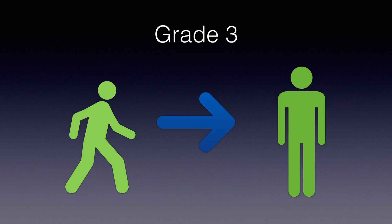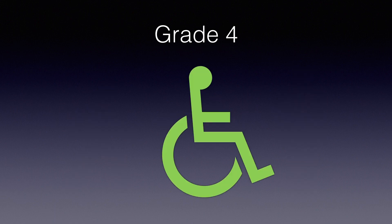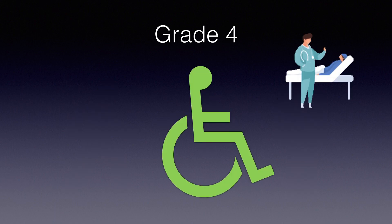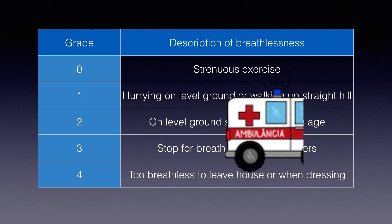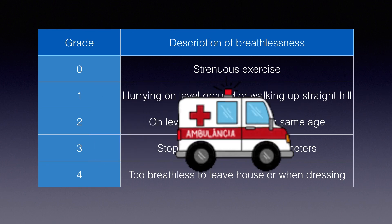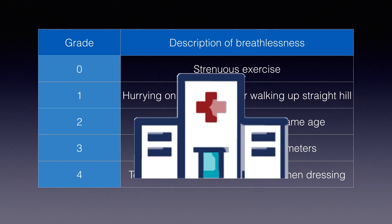Grade 3: I stop for breath after walking about 100 meters or after a few minutes on level ground. Grade 4: I am too breathless to leave the house, or I am breathless when dressing or undressing. Patients with breathlessness above grade 3 have a significantly poor prognosis, and this scale can be used to predict hospitalization and exacerbation.